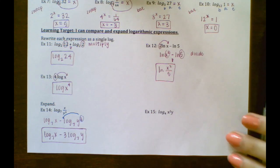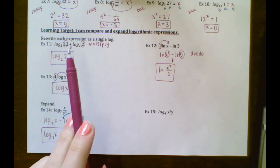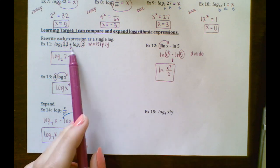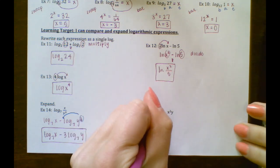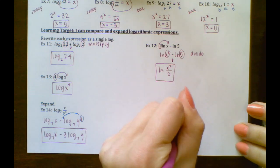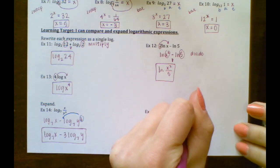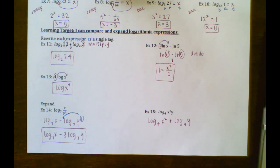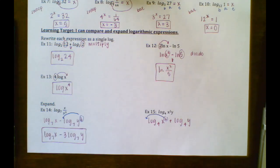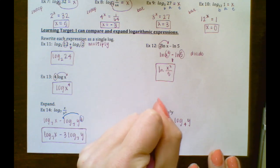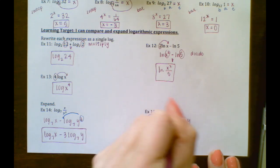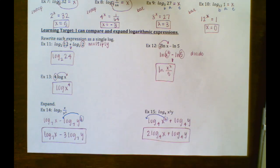Example 15 looks like example 11 — we're working backwards. If we're multiplying two items, we're adding when we expand: log base 4 of x squared plus log base 4 of y. And again we have the power property — we need to move the exponent out in front: 2 log base 4 of x plus log base 4 of y.